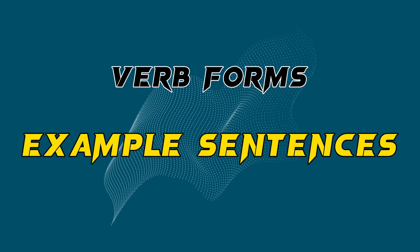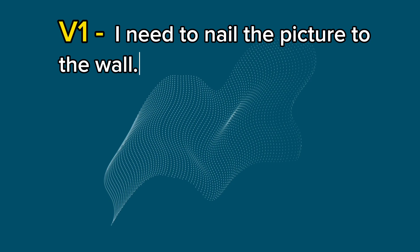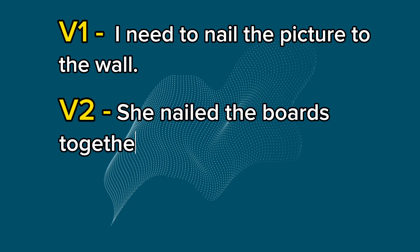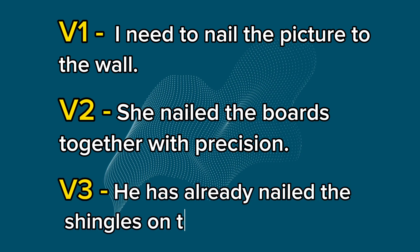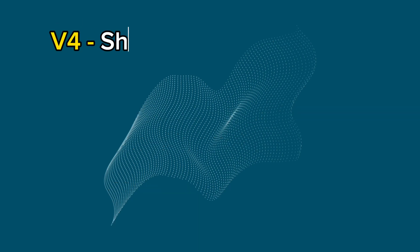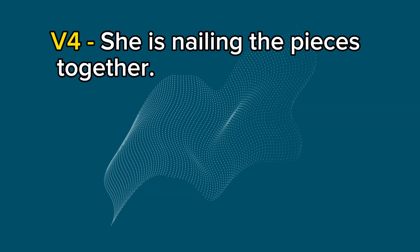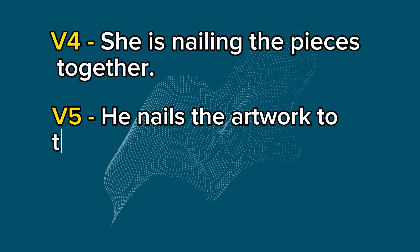Example Sentences. V1: I need to nail the picture to the wall. V2: She nailed the boards together with precision. V3: He has already nailed the shingles on the roof. V4: She is nailing the pieces together. V5: He nails the artwork to the display board.